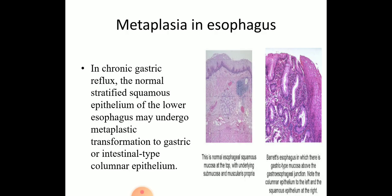Metaplasia in the esophagus: in chronic gastric reflux, the normal stratified squamous epithelium of the lower esophagus may undergo metaplastic transformation to gastric or intestinal type of columnar epithelium. In the first figure, you can see the squamous epithelium of the esophagus, while on the right side you can see gastric-type mucosa above the GEJ junction — note the columnar epithelium to the left and squamous epithelium to the right. Here, the squamous epithelium is replaced by intestinal-type mucosa, also called Barrett's esophagus, due to continuous gastric reflux.